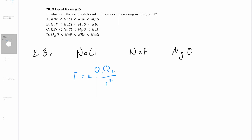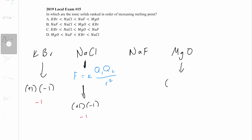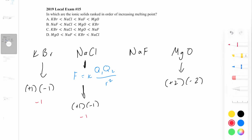Since we don't know k or r, we base our comparison entirely on q1·q2. For KBr: (+1)(−1) = −1. For NaCl: (+1)(−1) = −1. For NaF: (+1)(−1) = −1. But for MgO: magnesium has a charge of +2 and oxygen has a charge of −2, so q1·q2 = −4.